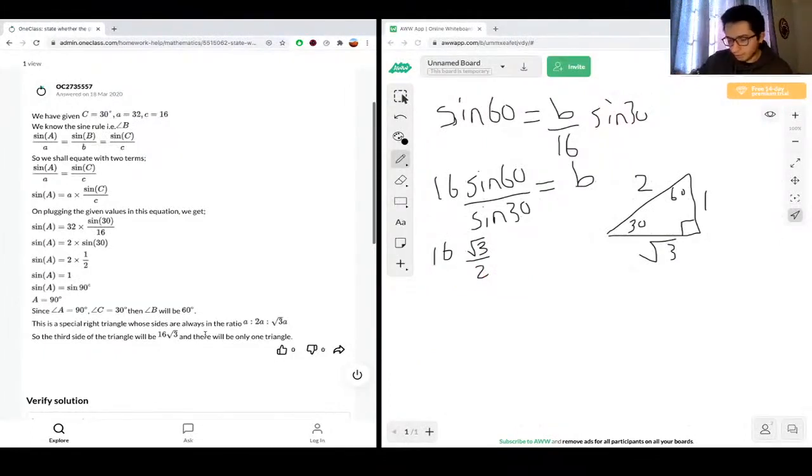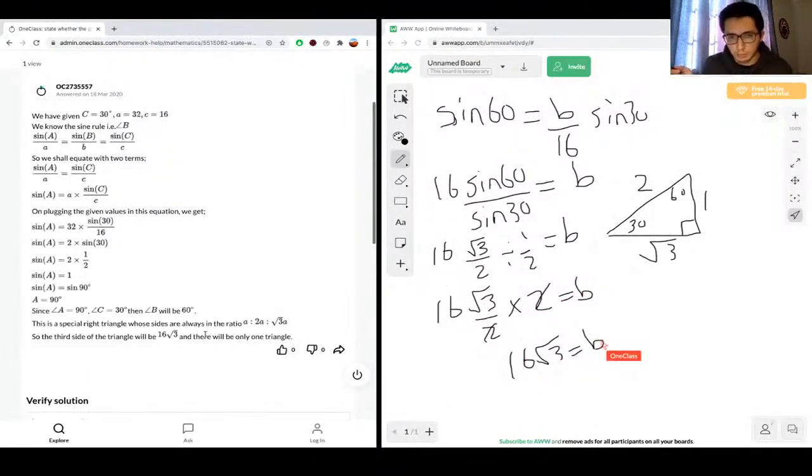So because we have 1 over 2 on the bottom, sine 30 is 1 over 2, so this is divided by 1 over 2. So we just flip this. When we're dividing to figure out the solution, we just flip it and multiply. So we would have 16 root 3 over 2 times 2, so we get rid of the 2s, and then we have 16 root 3 equals B. So that's the final component of the triangle.